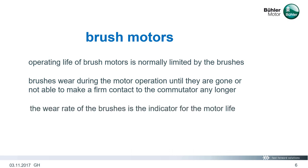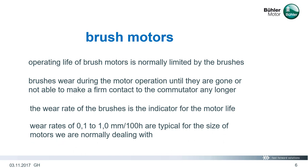The wear rate of the brushes is the indicator for the motor life. It tells how much the brush is worn after a certain time. Together with the knowledge of the length of the brush, the total running time can be calculated. Wear rates between 0.1 and 1.0 mm per 100 hours are typical for the size of motors. The wear rate is determined by the brush composition and the application conditions such as speed, current, voltage, temperature, humidity, duty cycle and so on.